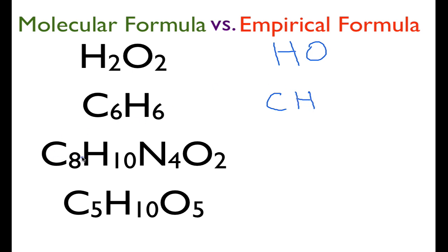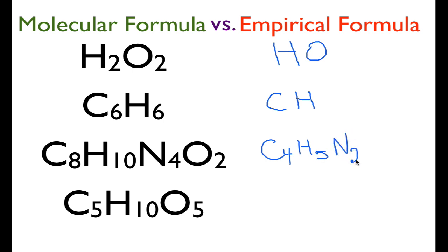Now here we have one that's a little more complicated — this is caffeine. You can see we have all even numbers: 8, 10, 4, and 2. So we can reduce each of those by dividing by 2. The empirical formula for caffeine is C₄H₅N₂O.